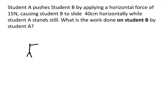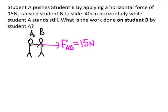Here's another situation. Let's say you have student A, who is not very nice, and they push student B. So there's going to be a force — I could call it F of A on B — and that is a 15 newton force that student A gives student B. That causes student B to slide 40 centimeters. So the displacement of student B is going to be 40 centimeters, which I'll convert to SI units right away: 0.4 meters. And we want to know the work done on student B by that force from student A.